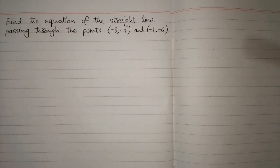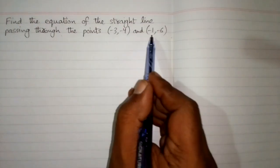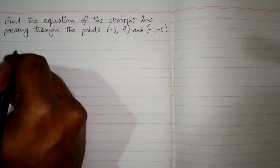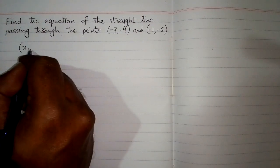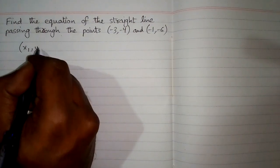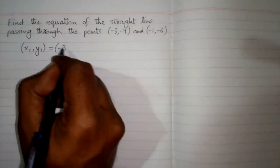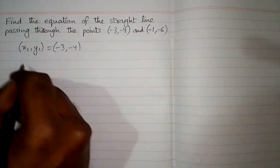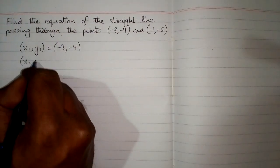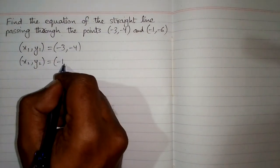In this video we will find the equation of the straight line passing through the points minus 3, minus 4 and minus 1, minus 6. First of all we will suppose that the first point is x1, y1, so x1 y1 is equal to minus 3, minus 4, and the second point is x2, y2.